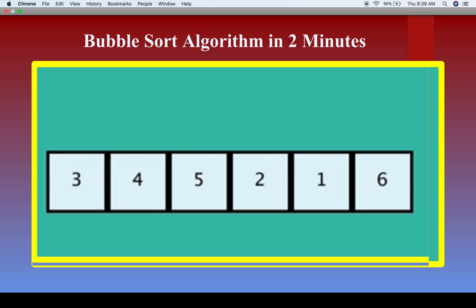Welcome to the session on bubble sort algorithm. In this session, I will explain the bubble sort algorithm. We have a set of numbers: 3, 4, 5, 2, 1, 6, and we have to arrange or sort these numbers in ascending order.